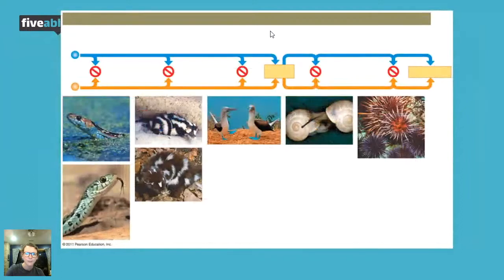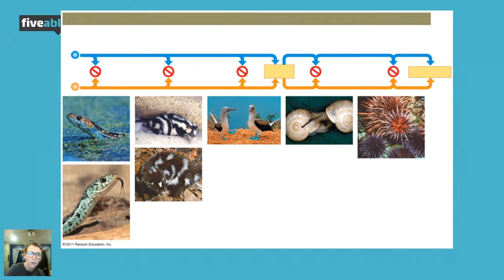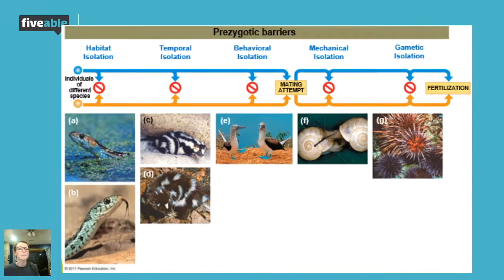Starting with our pre-zygotic barriers: first is habitat isolation. This means those species live in different habitats and therefore cannot mate. The two types of snakes shown — a terrestrial sand snake and a water snake — are relatively similar and probably had a recent common ancestor. They might be capable of reproduction in captivity, but because one lives on sand and one lives in water, they're never going to mate. Their habitats have isolated them so they are set to remain separate species.